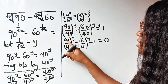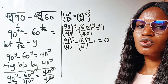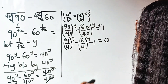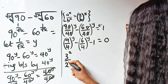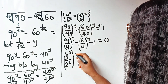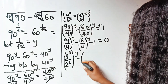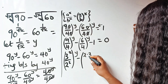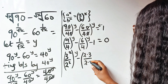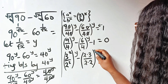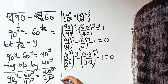Now, 9 is the same as 3 squared and 4 is the same as 2 squared. So we have (3 squared divided by 2 squared) to the power of y minus — since 6 is 2 times 3 and 4 is 2 times 2 — (2 times 3 over 2 times 2) to the power of y minus 1 equals zero.